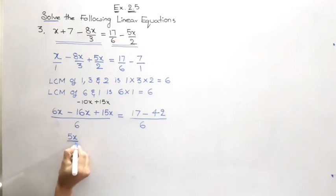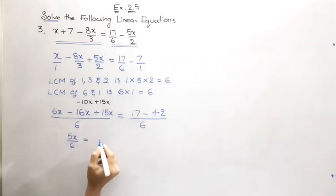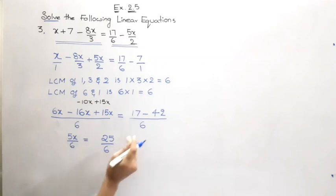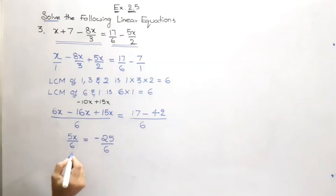And the denominator is 6 as it is, is equal to here 17 minus 42. As the bigger number is having minus here, give that minus to the result. So what we can do, we can cancel this 6 and 6, because if we transpose this 6 it is going to get cancelled.